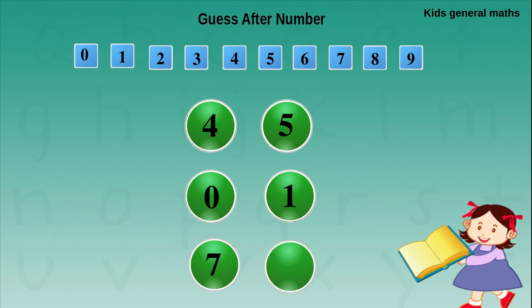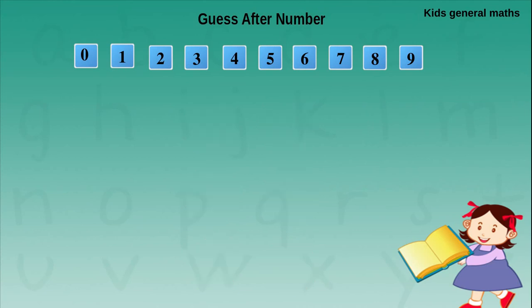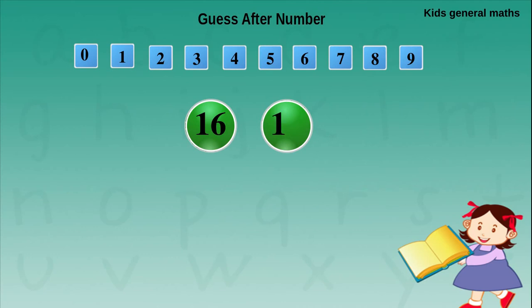Next they give 7. After 7 is 8. Now we are going to find the after number for 2-digit numbers. They are given 16. The first digit, that is 1, should be written as it is. For the next digit, that is 6, we are going to find the after number. After 6 is 7. So after 16 is 17.